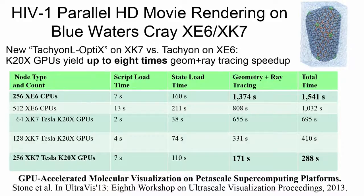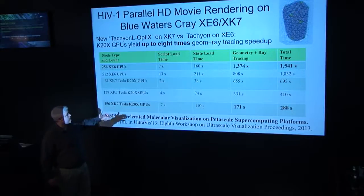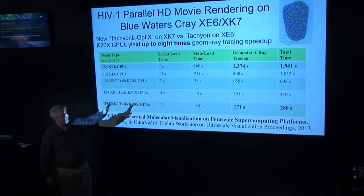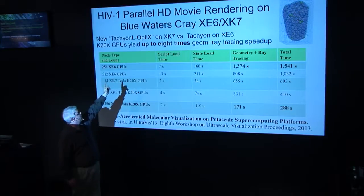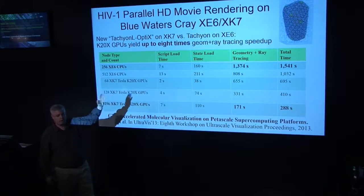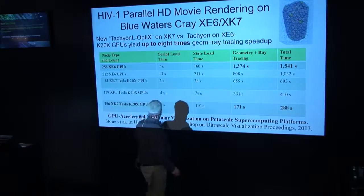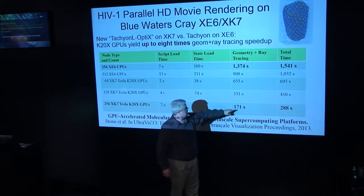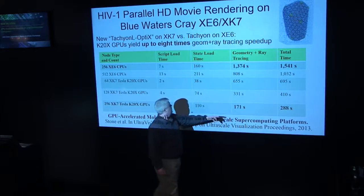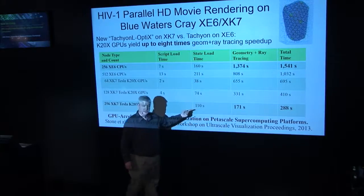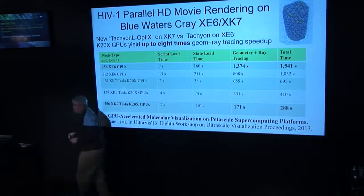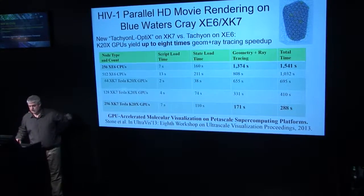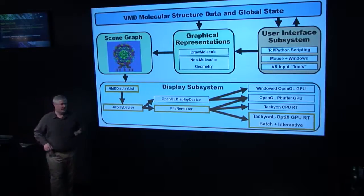Last year we ported this code onto the GPU using the NVIDIA OptiX library. Running on a large-scale movie rendering job, we achieved about a factor of eight speedup in overall performance. Ray tracing itself gives about a factor of six, with additional gains from using CUDA to generate molecular surfaces. Running on 256 nodes, out of 288 seconds of total run time, ray tracing takes only 171 seconds. We've reached the point where further performance gains require focusing on reducing disk IO.